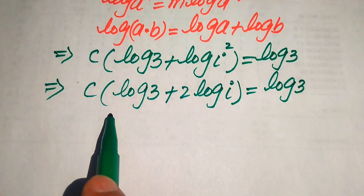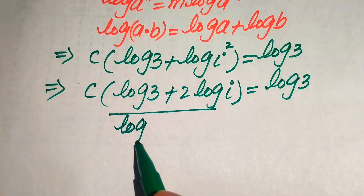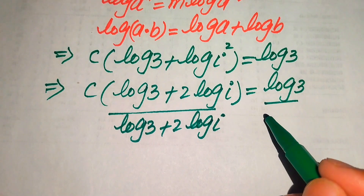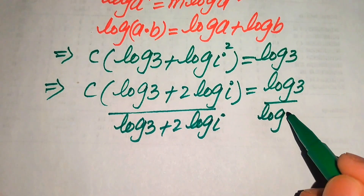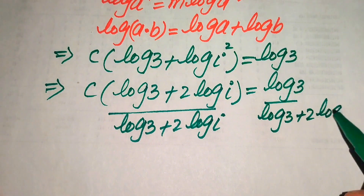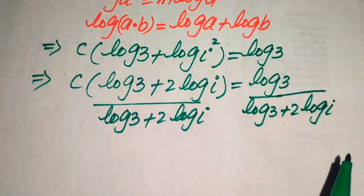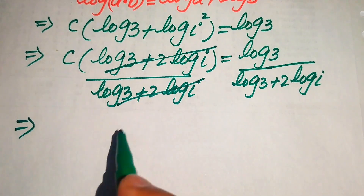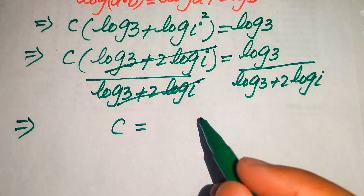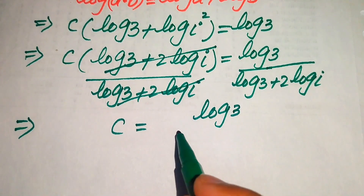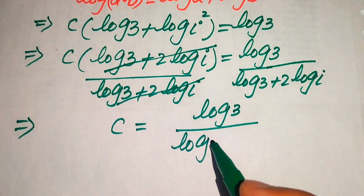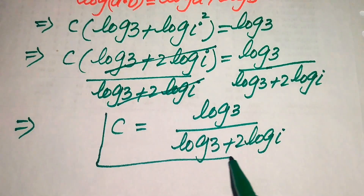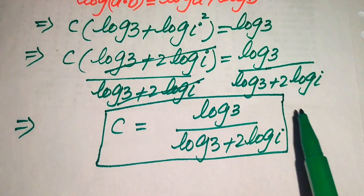To solve for c, we divide both sides by (log(3) + 2·log(i)). That whole value on the left cancels out, and we get c = log(3) / (log(3) + 2·log(i)). This is the value of c obtained from the first method.